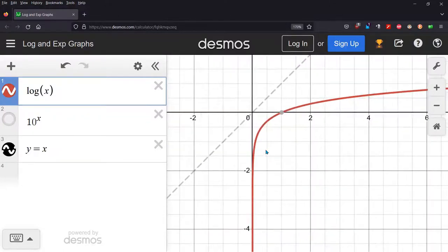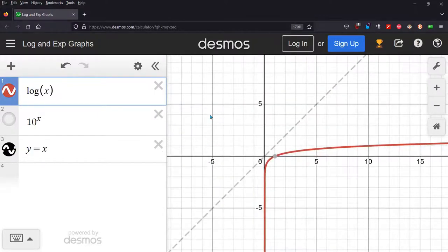All right, let's just look at the red function here. You can see there's a vertical asymptote happening. If I zoom out, it's happening at x equals 0.